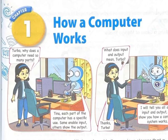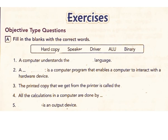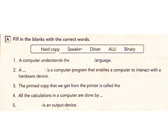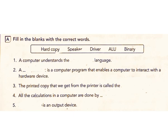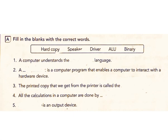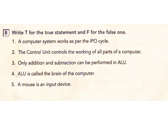Lesson 1: How a Computer Works. Exercises – Objective Type Questions. A. Fill in the blanks with the correct words. 1. A computer understands the binary language. Answer: binary. 2. A driver is a computer program that enables a computer to interact with a hardware device. Answer: driver. 3. The printed copy that we get from the printer is called the hard copy. Answer: hard copy. 4. All the calculations in a computer are done by the ALU. Answer: ALU. 5. Speakers is an output device. Answer: speakers.